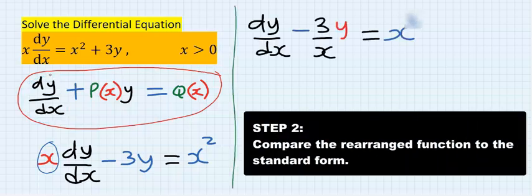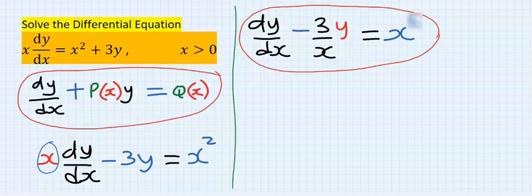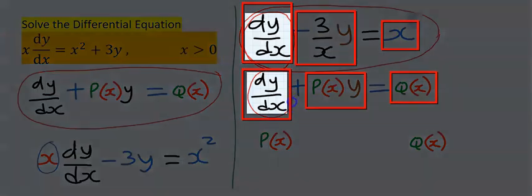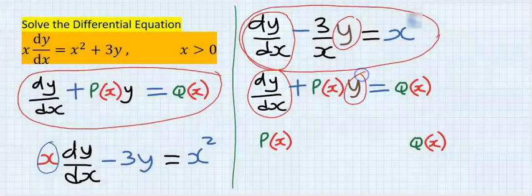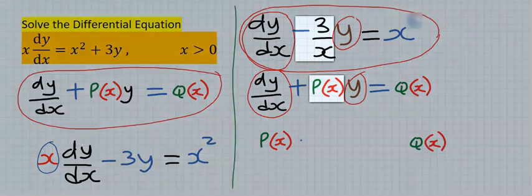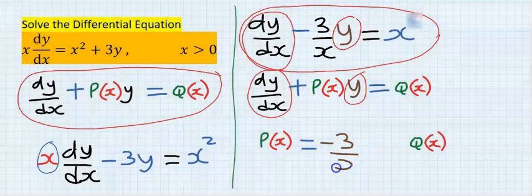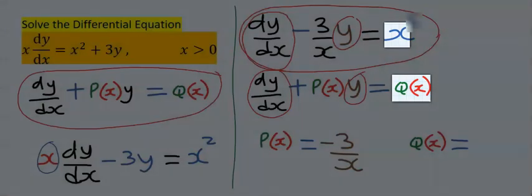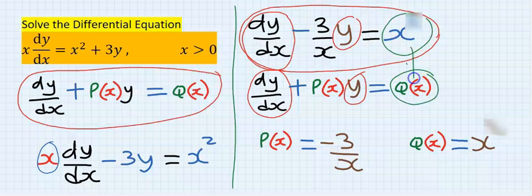Step number two: compare the rearranged equation with the standard form. Comparing both, this is the y, this is the y, so it's the same. Now this is y, this is y, is the same. You can see that our P(x) is minus 3 over x, and if you compare, our Q(x) is x. This is here and also it is here, so you just compare to this.